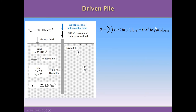We will also have a bearing capacity at the base of the pile, evaluated by multiplying the area of the base by the Nq coefficient and the effective stress at the base of the pile. Be careful: for the shaft terms, we use average effective stress, while for the base term, we use the effective stress at the tip — at 15 meters depth.